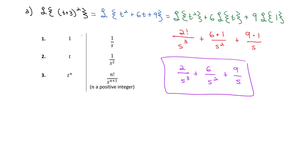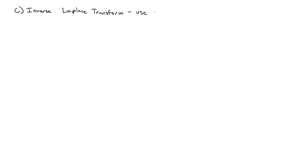Now that we've seen how to use the table to calculate Laplace transforms, another important skill is going the other way — finding the inverse Laplace transform — where we basically use the table backwards, and we may need to factor out constants to massage the expression into a recognizable form.